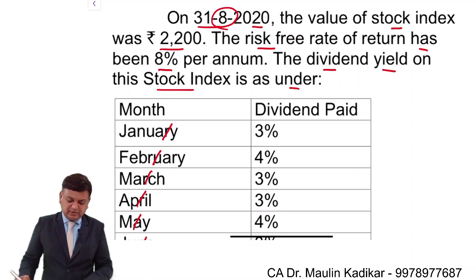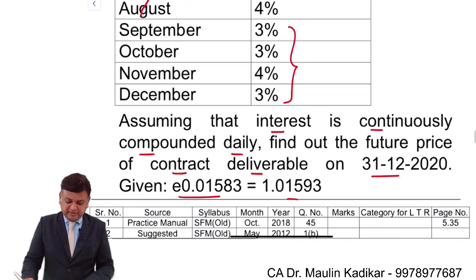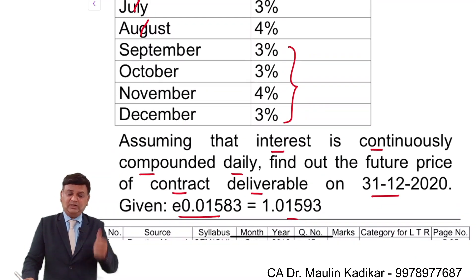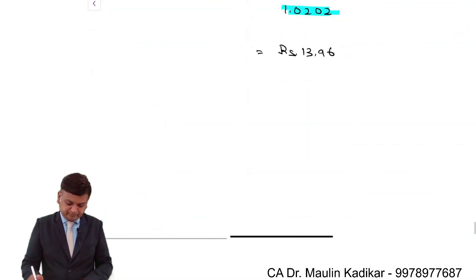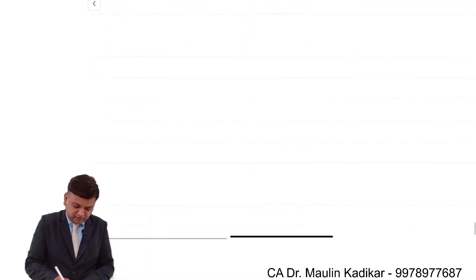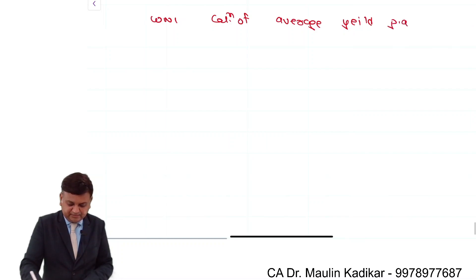Over here, we have been provided with the information that the rate of interest is 8% per annum. We can make the computation of the futures price using the spot value, dividend information, and rate of interest given to us. Working note number 1: calculation of average yield per annum from 1st of September to 31st of December.